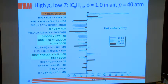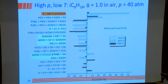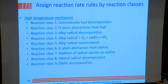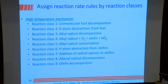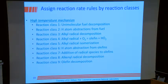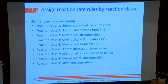So if we want an accurate mechanism, we need to know accurately the rate of alkyl radical addition to molecular oxygen, and also the rate of alkyl radical beta scission. For the larger alkanes we apply reaction rate rules because we cannot study all of them in an elementary way.